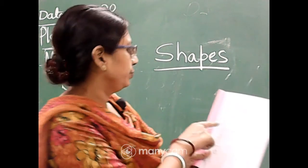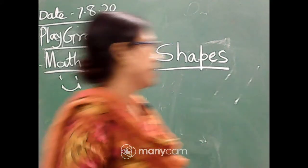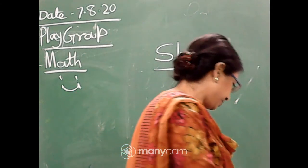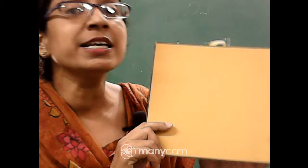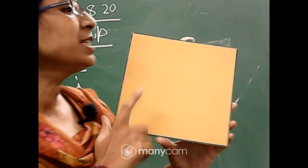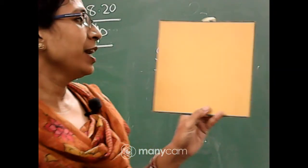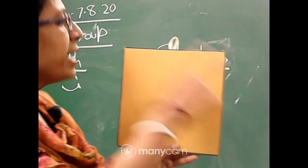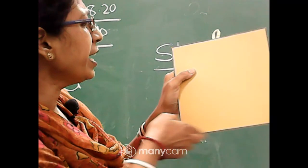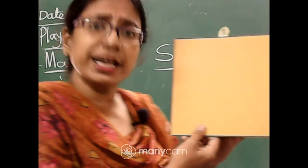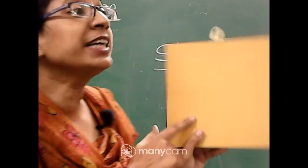First — square. Look, this is a square shape. Say with me: square. Look, there are four sides: one side, two sides, three sides, four sides. And all the sides are equal. It is square.